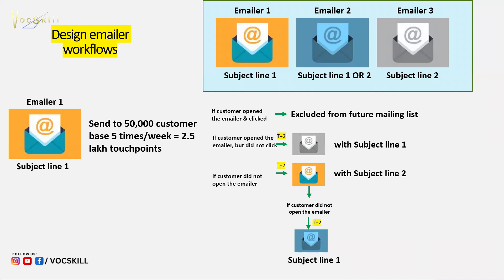Imagine you opened the biryani email but didn't click on it. That means maybe you don't like biryani or didn't feel like eating it that day. So the next day I'll send you a different emailer — say, Chinese food at 20% discount. But I'll keep the same subject line, because the subject line worked — you opened it last time. You just didn't like the biryani, so I keep the subject line but change the content.